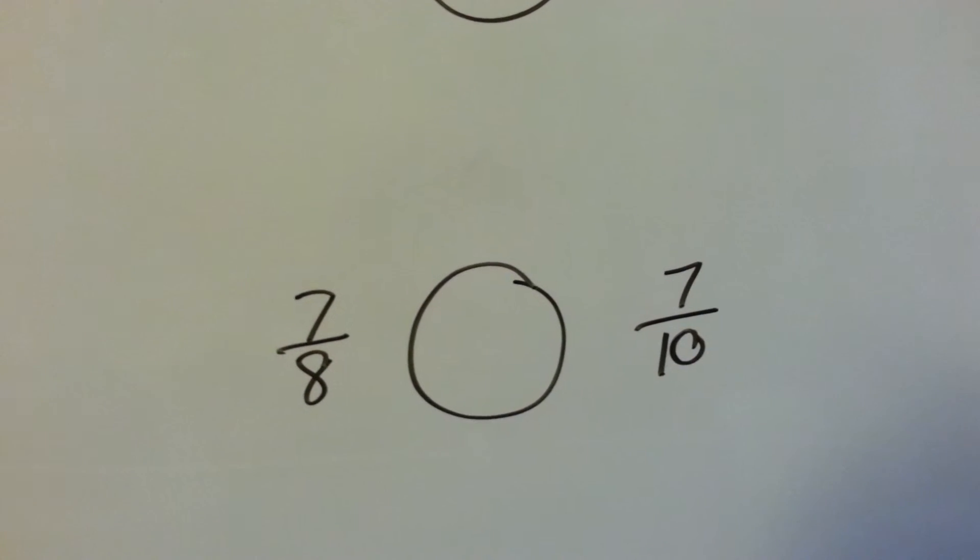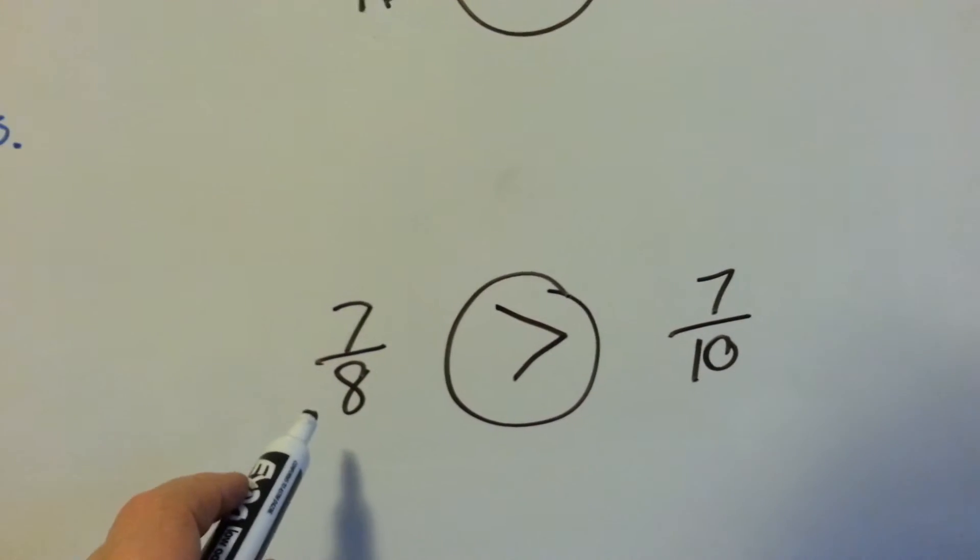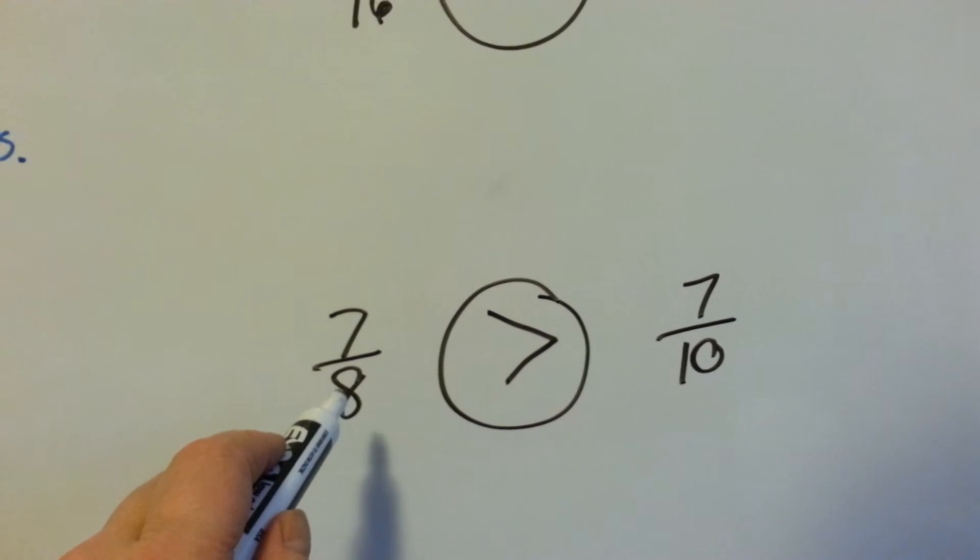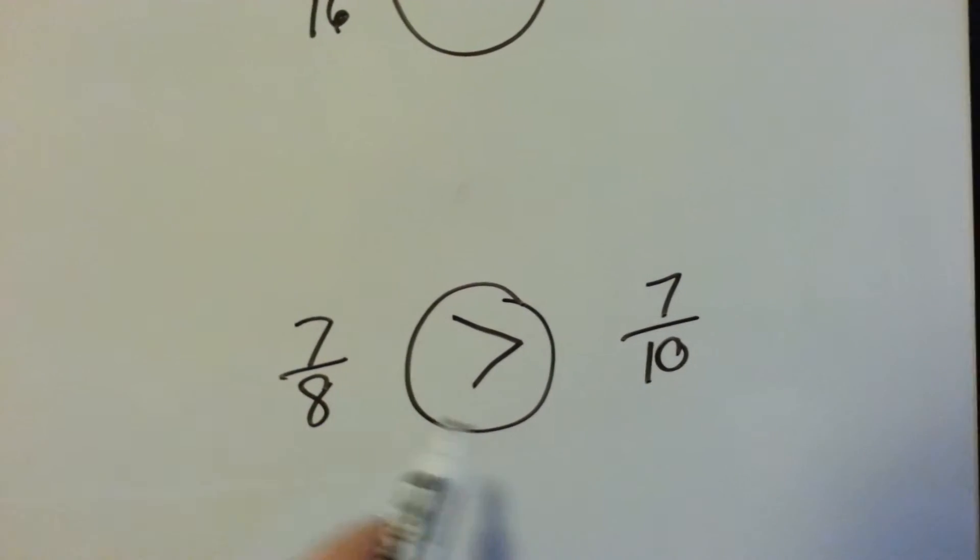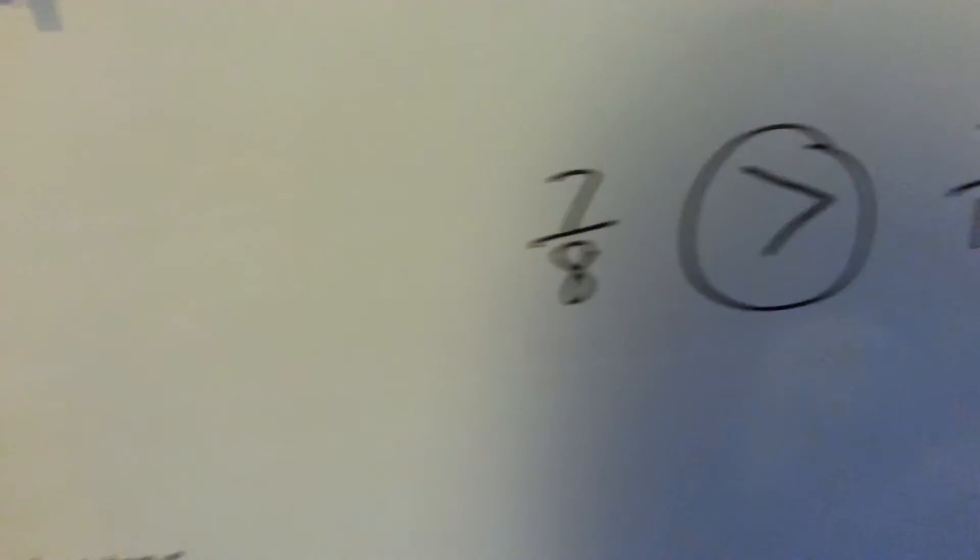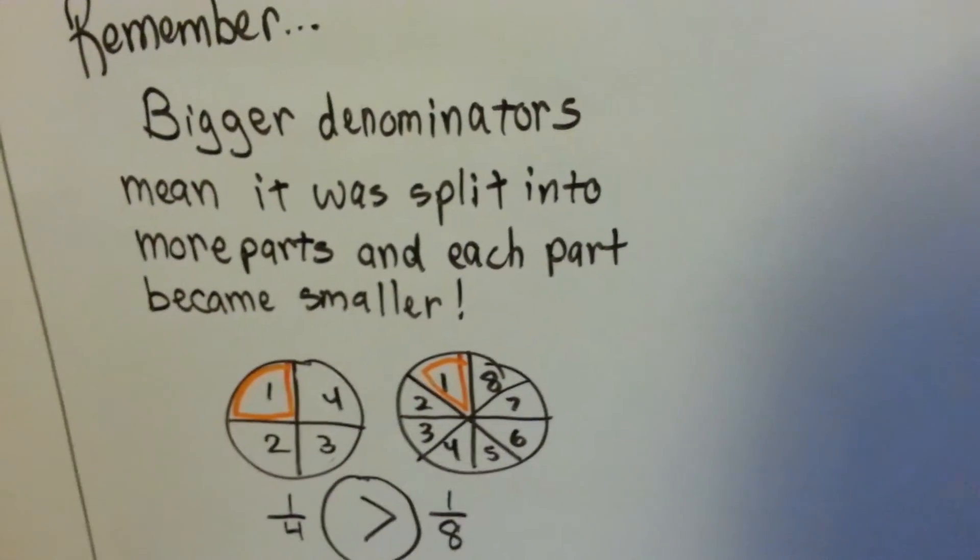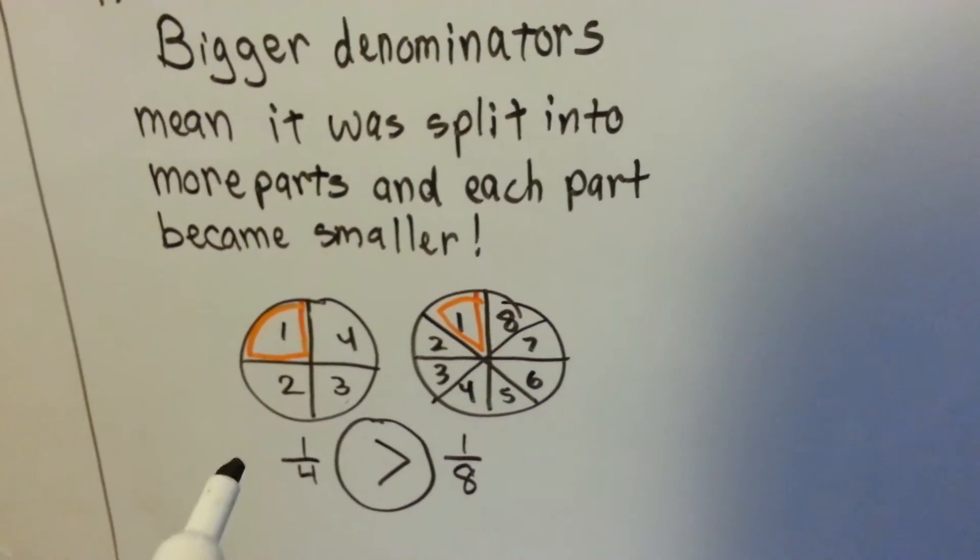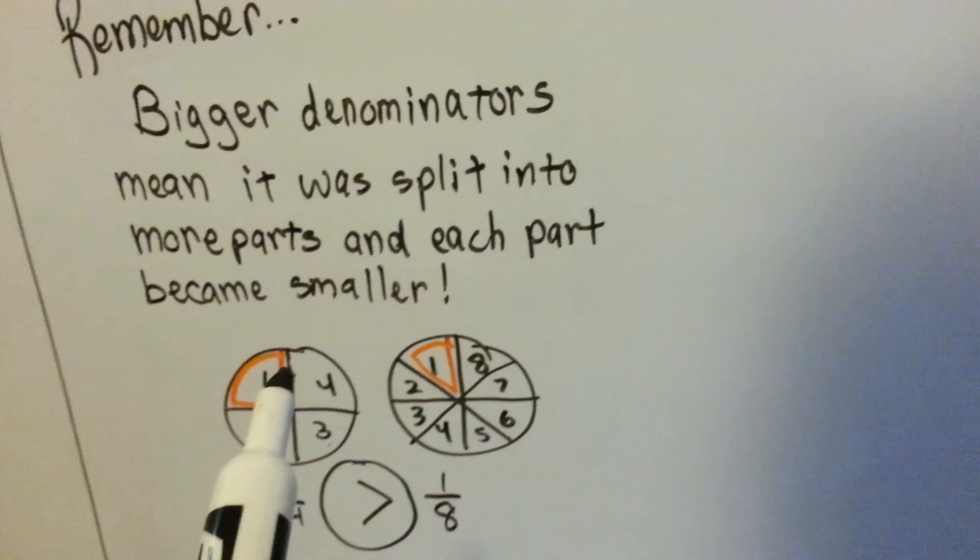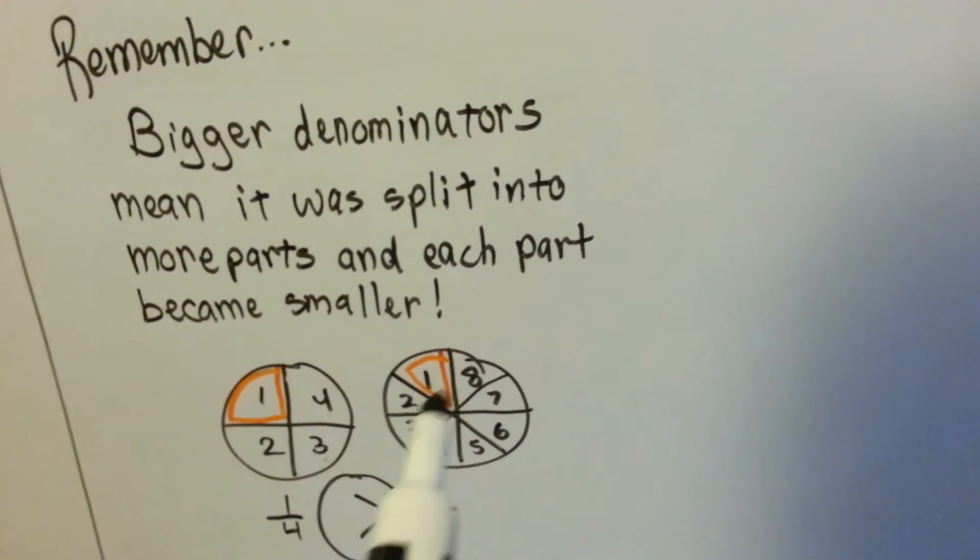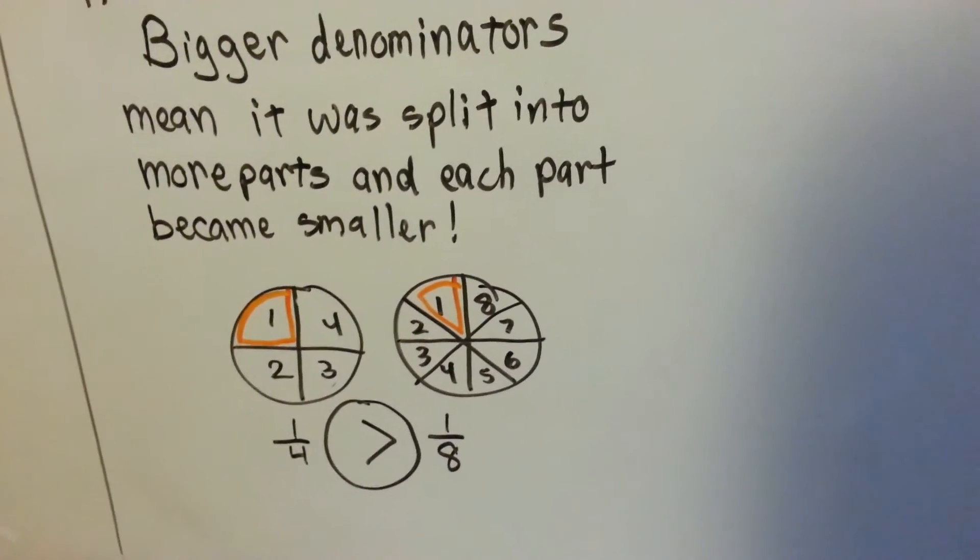How about here? 7 eighths or 7 tenths? The smaller the denominator, the bigger the number. If you had a candy bar split into 8 pieces and you had 7 of them, you would have a lot more candy than if the candy bar was split into 10 pieces and you only had 7 of them. You almost have all of them with this one. You've got 7 out of 8. So just remember, the bigger the denominators mean it was split into more parts and each part became smaller. 1 fourth is greater than 1 eighth. 1 eighth is a tiny little piece and 1 fourth is twice as big. Big denominator means little number. Remember that.